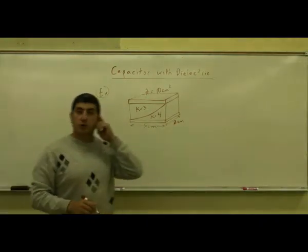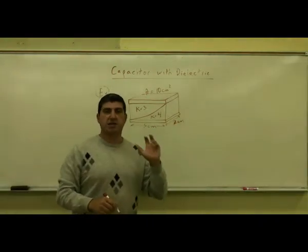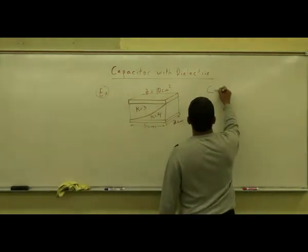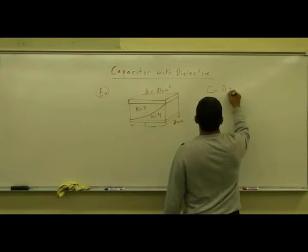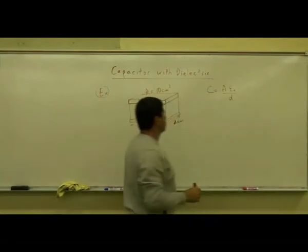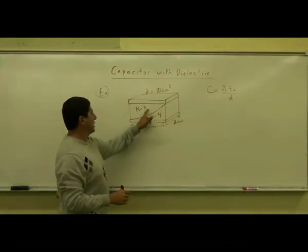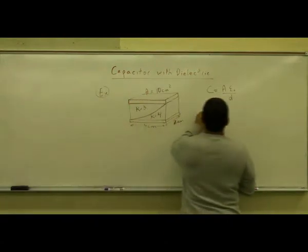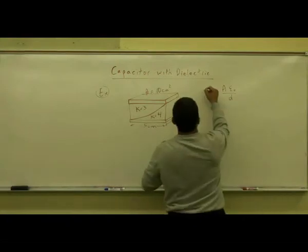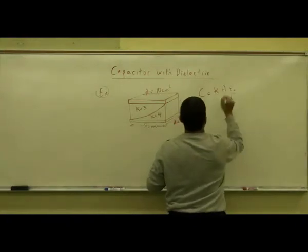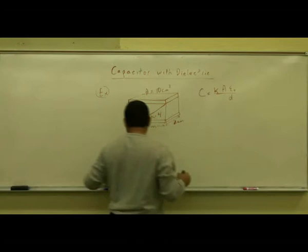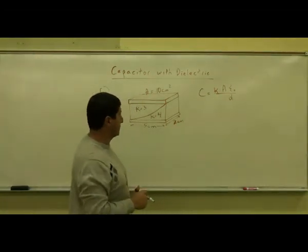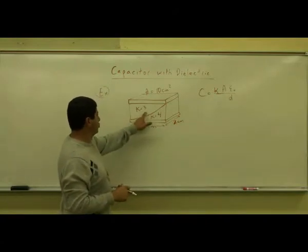What would be the capacitance of this capacitor? We know from theory that the capacitance of a parallel plate capacitor is A·ε₀ over D. However, here we have two capacitors with different dielectric constants, so we use C = κ·A·ε₀ over D. But what happens when you have two dielectrics with a curved boundary?